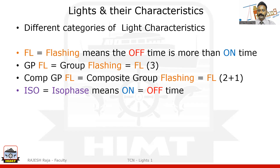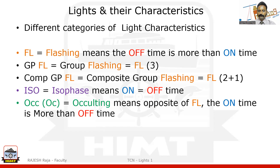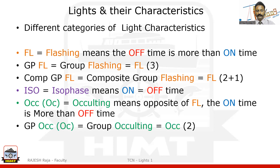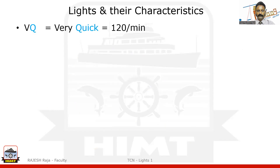Occulting is exactly opposite to flashing — the torch is always on, and for a short duration you switch it off. You can have group occulting and composite group occulting as well. Then there is quick flash, which means 60 flashes per minute; very quick at 120 flashes per minute; and ultra, which is 180 flashes per minute.